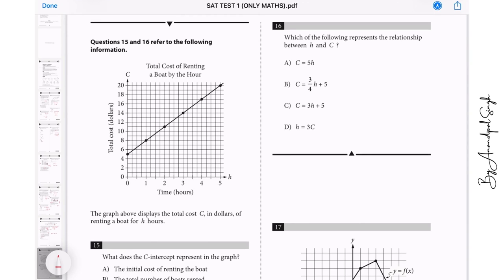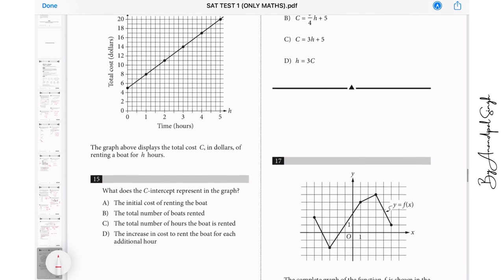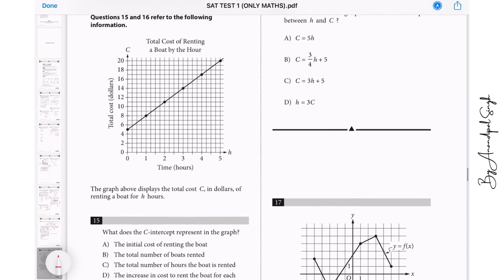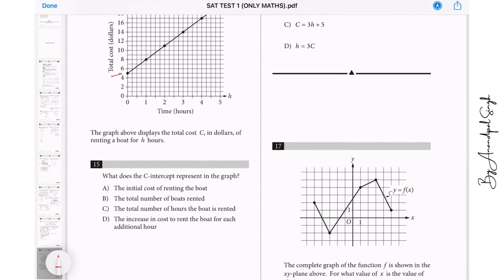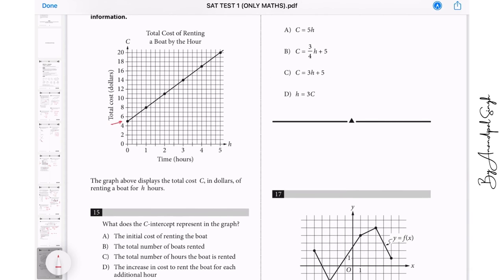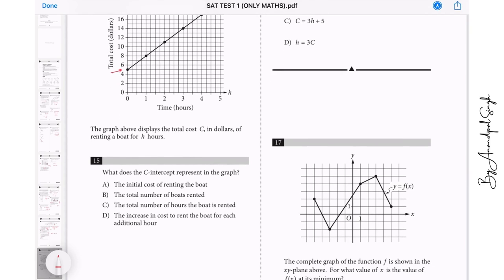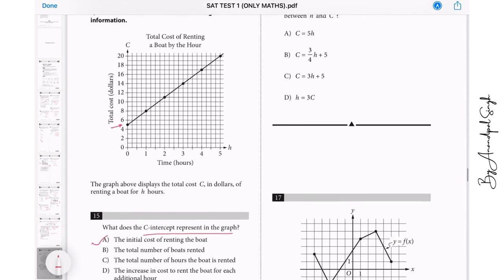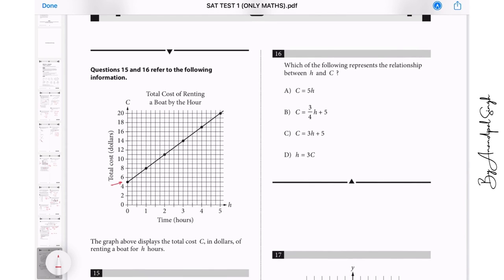Let us go to question number 15 now. The graph shows the total costs C in dollars for renting for H hours. It means that this is the initial cost. Even before renting, even before taking it, you know, using it, you have to pay the initial cost of five dollars. What does the C intercept represent in the graph? The initial cost of renting the boat. Yes, this is the answer.